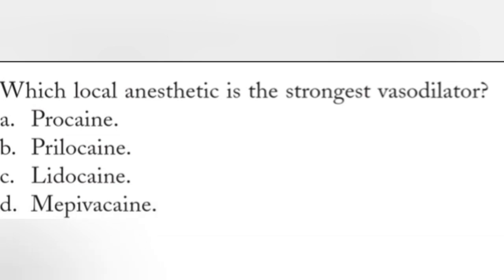The last four questions were from Malamed's first chapter, neurophysiology. This question is from Malamed's second chapter, Pharmacology of Local Anesthetics. The question is: which local anesthetic is the strongest vasodilator? Option A, procaine. Option B, prilocaine. Option C, lidocaine. Option D, mepivacaine.